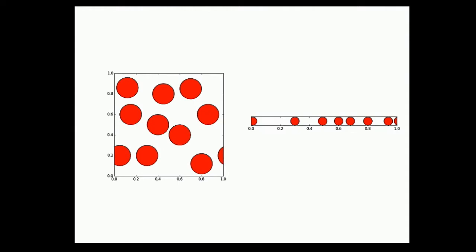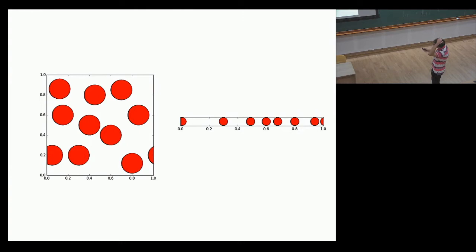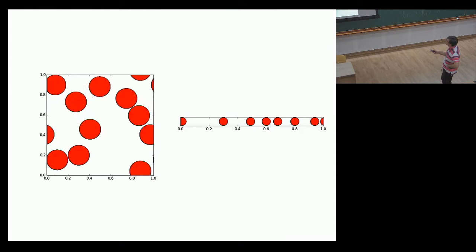You kick one of the balls and you see that it sets all the other balls in motion, and very quickly the energy is shared among all of the spheres. If you do the same thing in one dimension and the balls are all identical, then when one kicks the next, it's just that one starts moving and the first one stops, and so on.